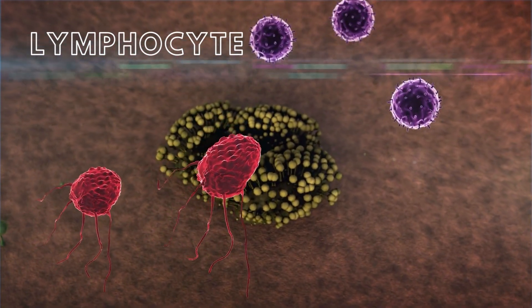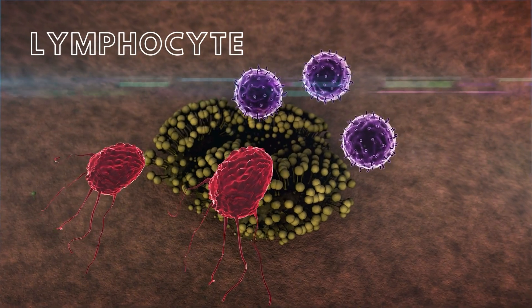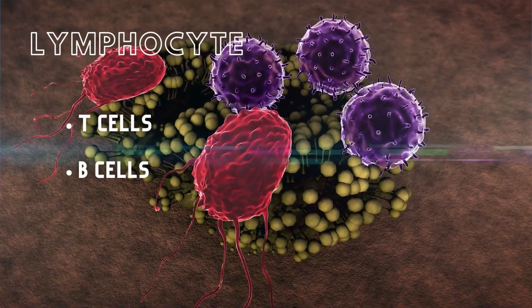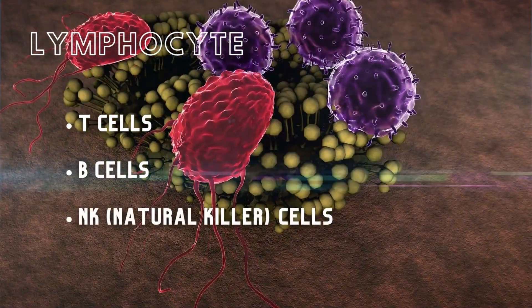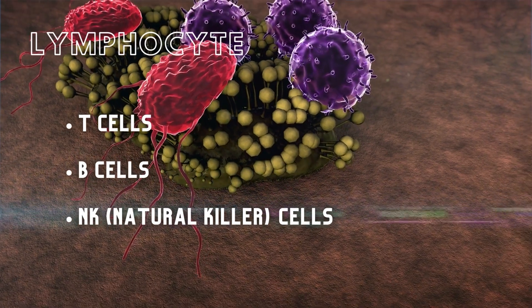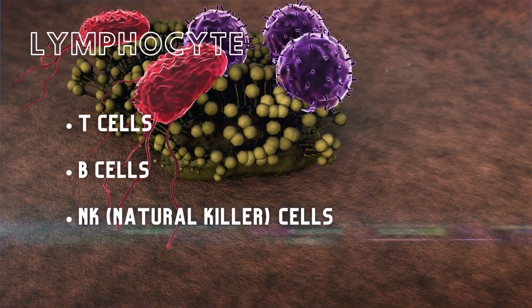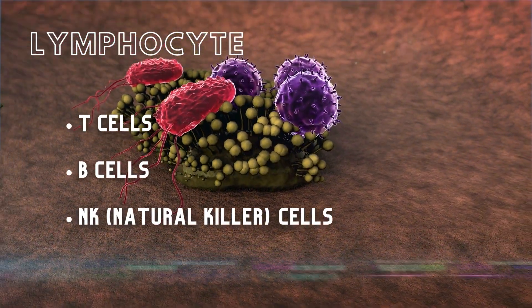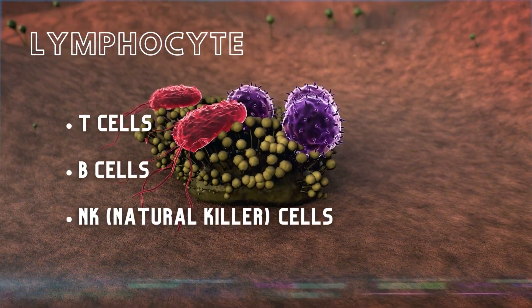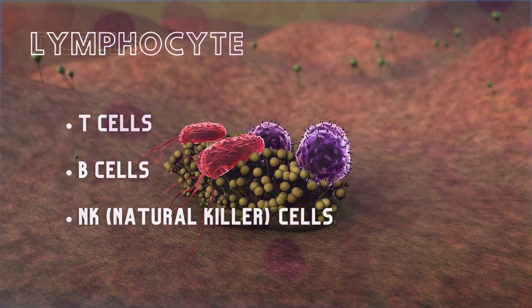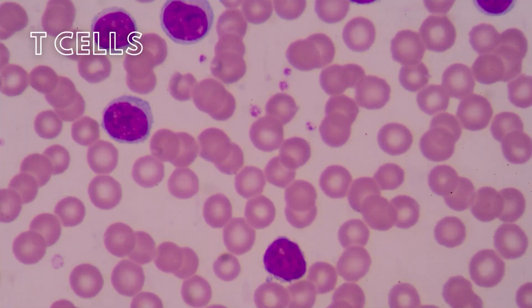There are three classes of lymphocytes: T cells, B cells, and NK cells. Each cell type has distinctive biochemical and functional characteristics. Let's talk a little bit more about each of these types of lymphocytes.